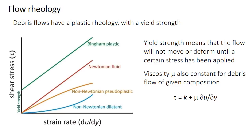For completeness, two other non-Newtonian fluid types exist. In pseudoplastic fluids, viscosity decreases with increasing shear stress — ketchup is an example, which is why shaking or hitting the bottle (increasing shear stress) helps it flow by reducing viscosity. Silly putty is an example of a dilatant fluid: it flows smoothly under low shear stress, but becomes harder (higher viscosity) under high shear stress, such as when you hit it.